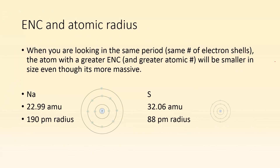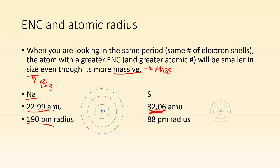When you're looking in the same period — meaning you have the same number of electron shells — the atom with the greater effective nuclear charge, or greater atomic number, will be the smaller sized one, even though it's more massive. Don't confuse mass and size: mass tells you how much stuff is there; size tells you how big it is. Sodium has a mass of 22.99 AMU and a radius of 190 picometers, but sulfur is a more massive atom packed into a smaller package because its effective nuclear charge is greater.